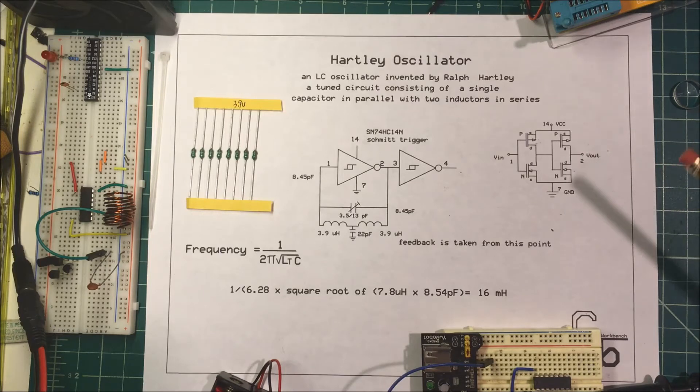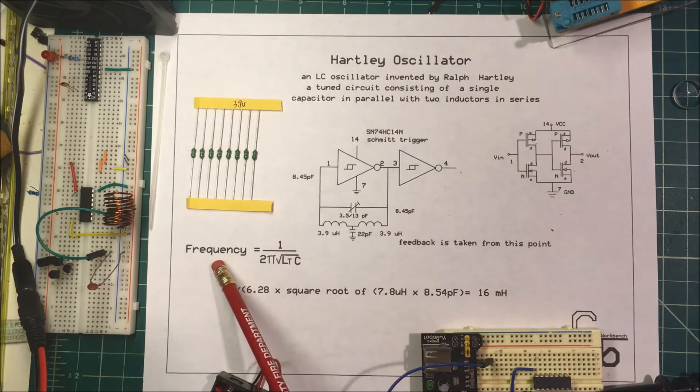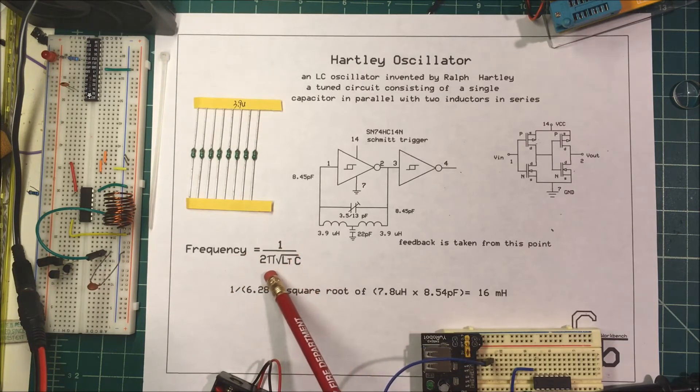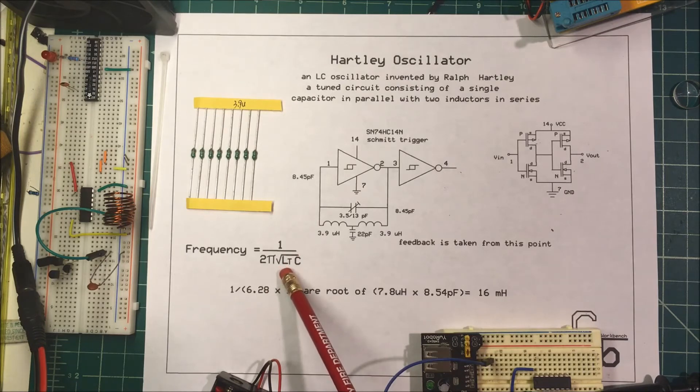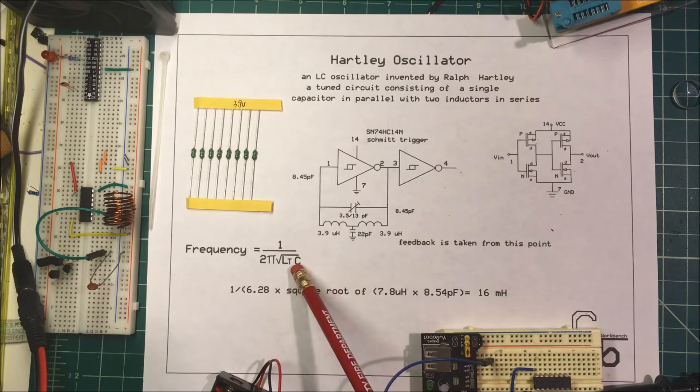Now, what we want to do is we want to have 16 megahertz. So in order to get our 16 megahertz, our frequency is going to be equal to 1 divided by 2π times the square root of the total inductance times the capacitance.